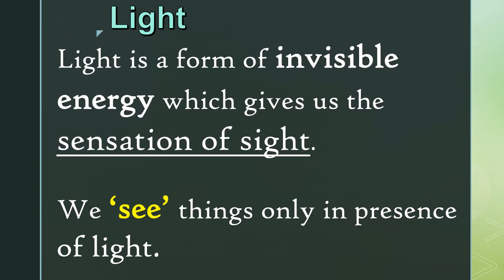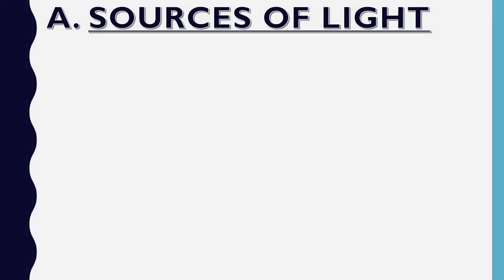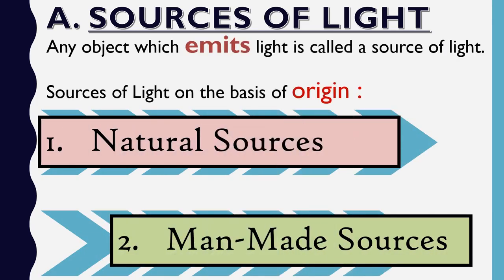Now let us learn about some sources of light. Any object which emits light is called a source of light. We will be looking at two different types of sources on the basis of origin: the first one is natural sources, and the second is man-made sources. Let's learn about each of them in detail.